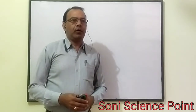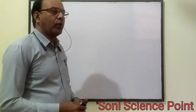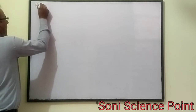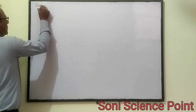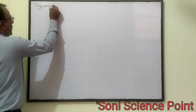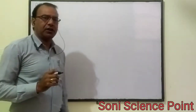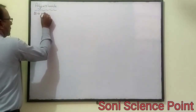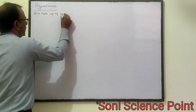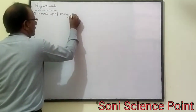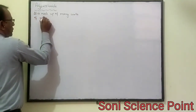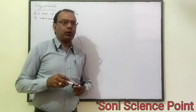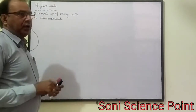Hello students. In the previous part we studied about monosaccharide and disaccharide, one more example of oligosaccharide. In this part we will discuss polysaccharide. Polysaccharide is the carbohydrate which contains many units — we can say thousands of units — of monosaccharide.